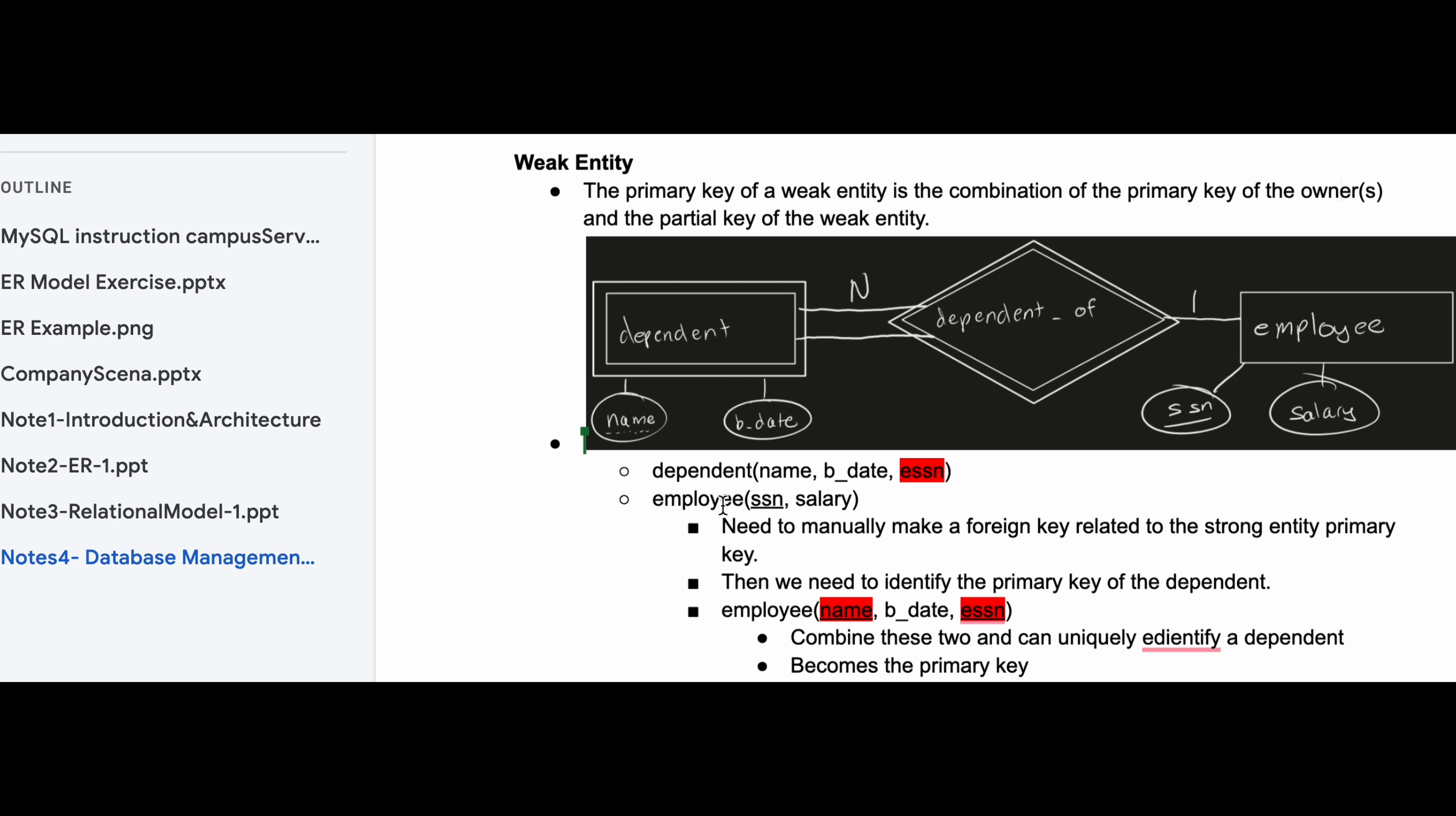These are very basic. Then we have our dependent and for the dependent we have the name, the birthdate, and the ESSN. Now we're going to come back to the ESSN because for now you can think about just only writing the name and the birthdate.